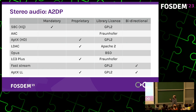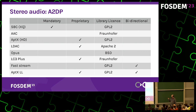The specification also allows codecs not defined in the specification itself. Most of them have been implemented to improve audio quality but are not supported by all devices. For example, the aptX family of codecs can be found on Qualcomm devices or need licensing from Qualcomm, and the LDAC codec is found on Sony devices.